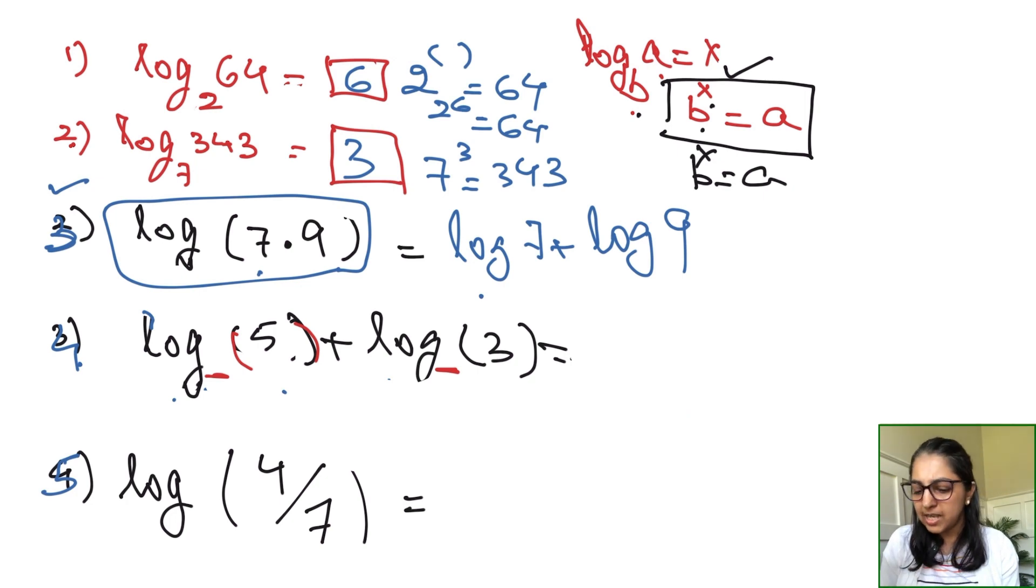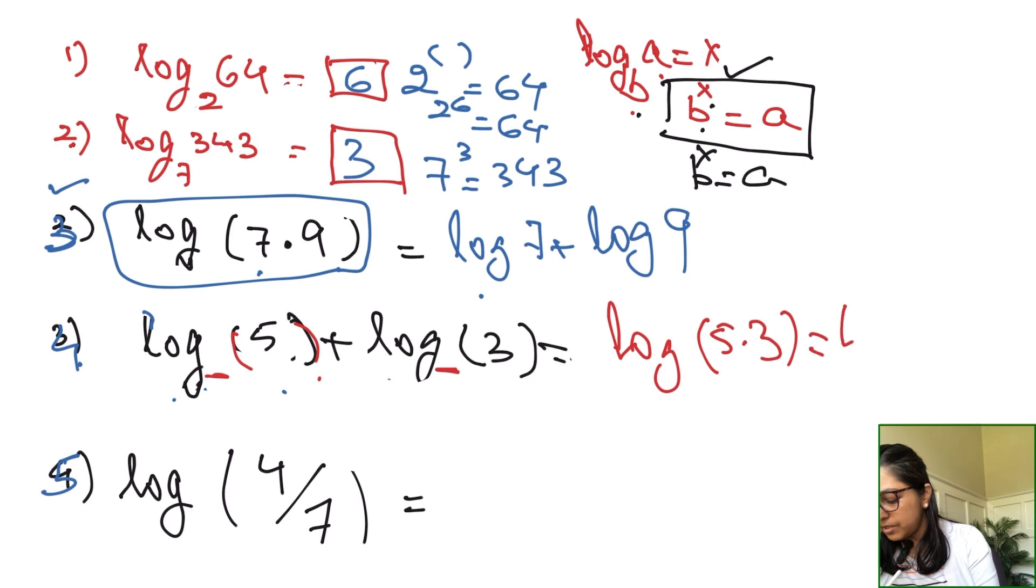Coming back to this example, log 5 plus log 3 in expanded notation will be log(5 × 3), which is log 15. Again, the property utilized is the product rule.